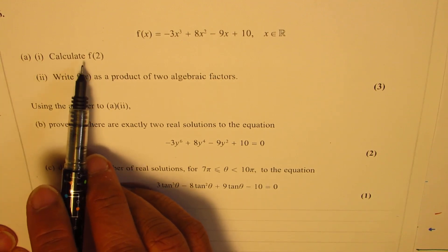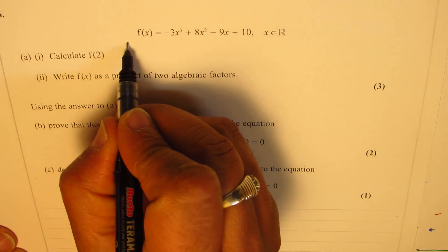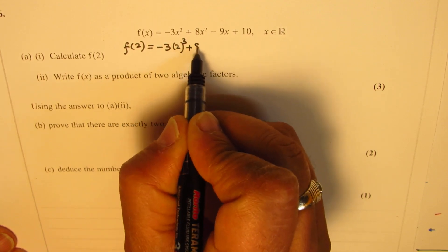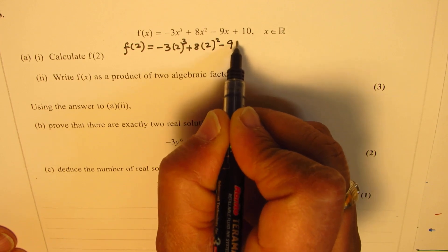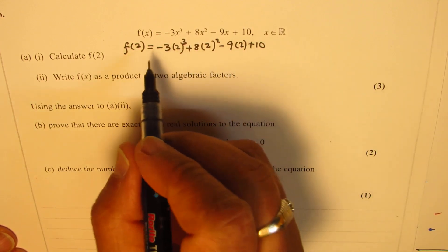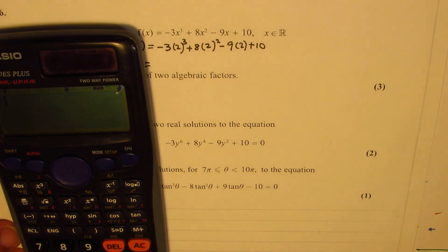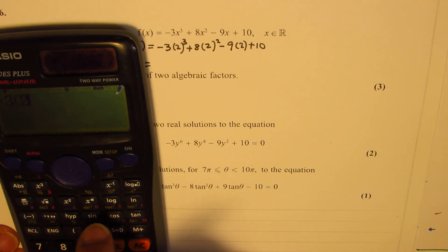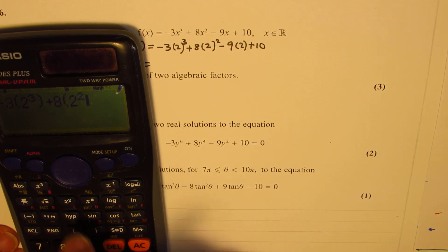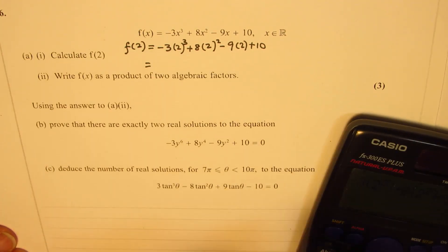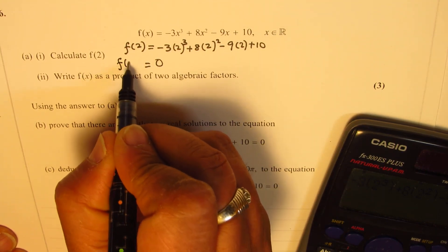Let's begin with the very first one to evaluate the value. We need to just substitute 2 in our equation. So we get minus 3 times 2 cubed plus 8 times 2 squared minus 9 times 2 plus 10. We can use a calculator to figure this out. That gives you 0. So we found that f of 2 is 0.